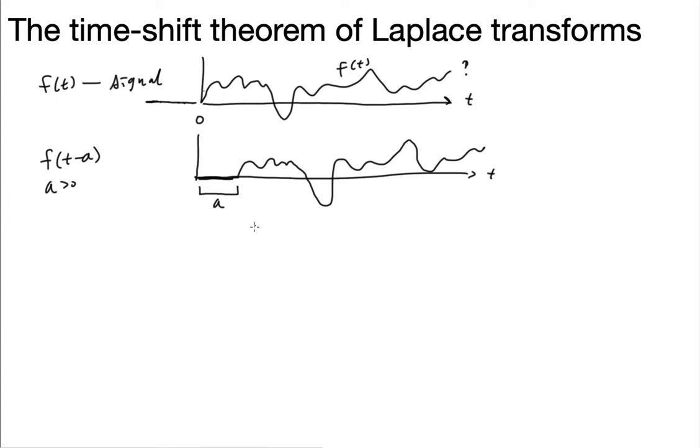So the idea here is now this function f of t minus a turns on at time equals a now.